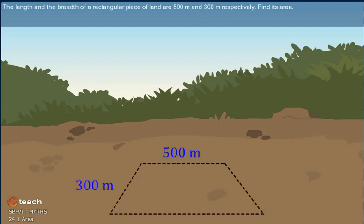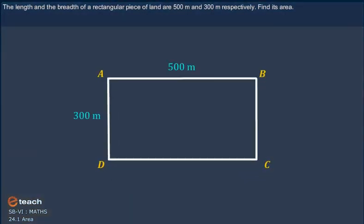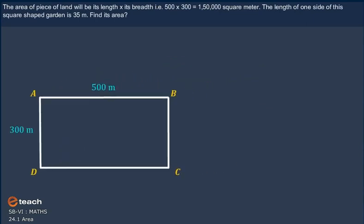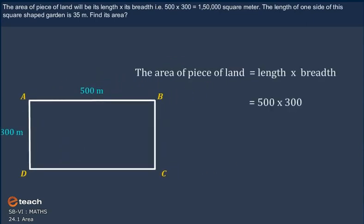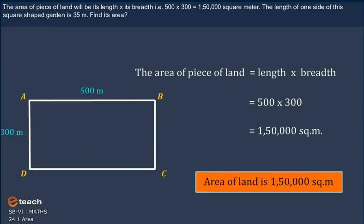The length and the breadth of a rectangular piece of land are 500 meter and 300 meter respectively. Find its area. The area of piece of land will be its length into its breadth. That is, 500 × 300 is equal to 150,000 square meter.